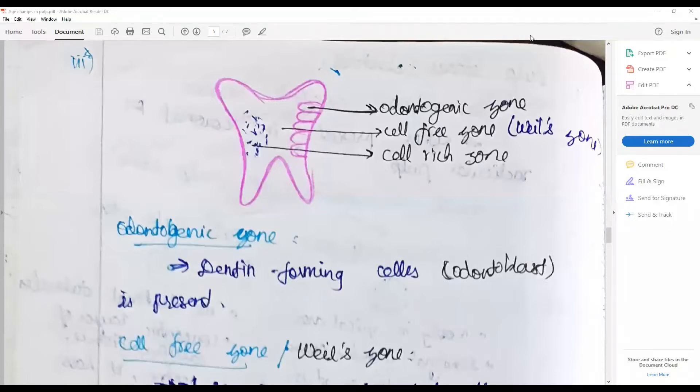Hi, hello everybody, welcome again to One Question a Day. We are going to see the cells of the pulp today. The cells of the pulp are seen in three layers: first is the odontogenic zone.